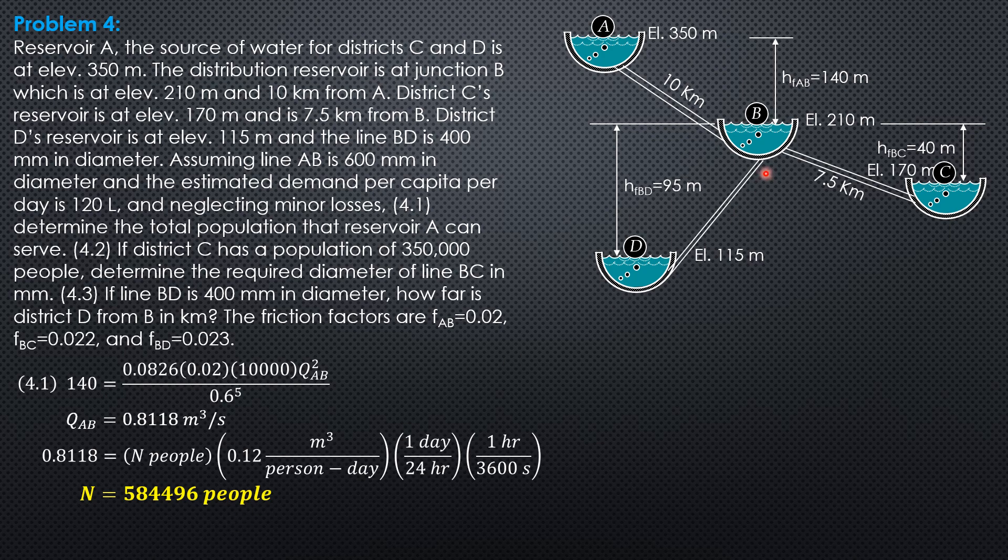Then, for the discharge in BC, instead of converting 350,000 to 3,000 people times 0.12 cubic meter like this, we just apply similar ratio and proportion. So, Q_BC as to 350,000 people equals 0.8118 as to 584,496. The result is the same. Q_BC is 35 over 72 cubic meter per second.